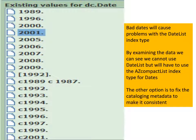Checking out the data before you create an index can help prevent problems. Take dates, for example. We see the date data is all over the map — totally inconsistent. We have copyright 'C' for some of them, one's in brackets, one has two years. This is going to cause a real problem: one, the index entries aren't going to be collated correctly; two, this is not a standard date format. So if we want to use a date list index type, we can't — it'll crash our web server. Dates must be in YYYYMMDD format. We can use an AZ compact list instead. The old computer saying is: garbage in, garbage out.